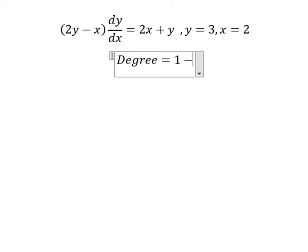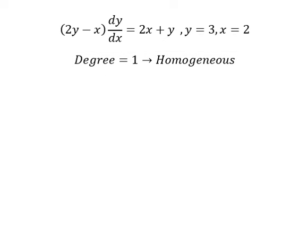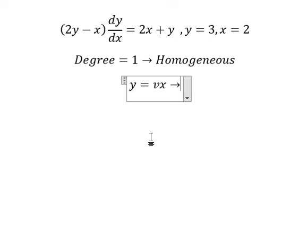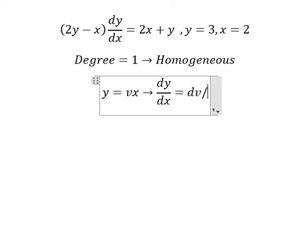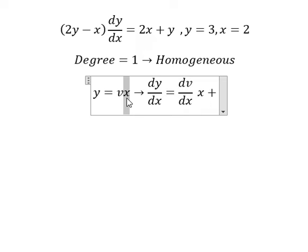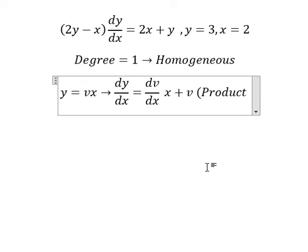This is a homogeneous equation, so I will put y equals vx. Next we do the derivative for both sides. We have dv/dx multiplied by x, and we have v from the product rule.